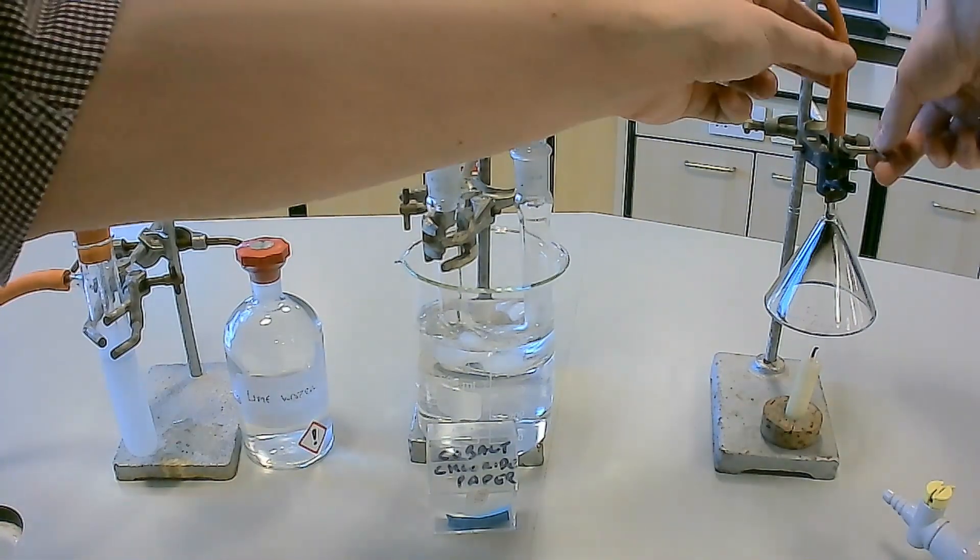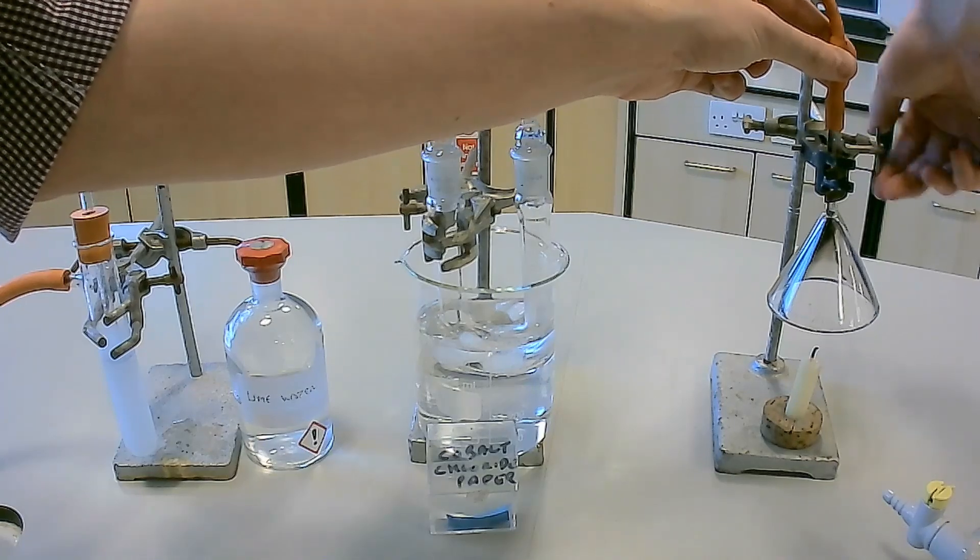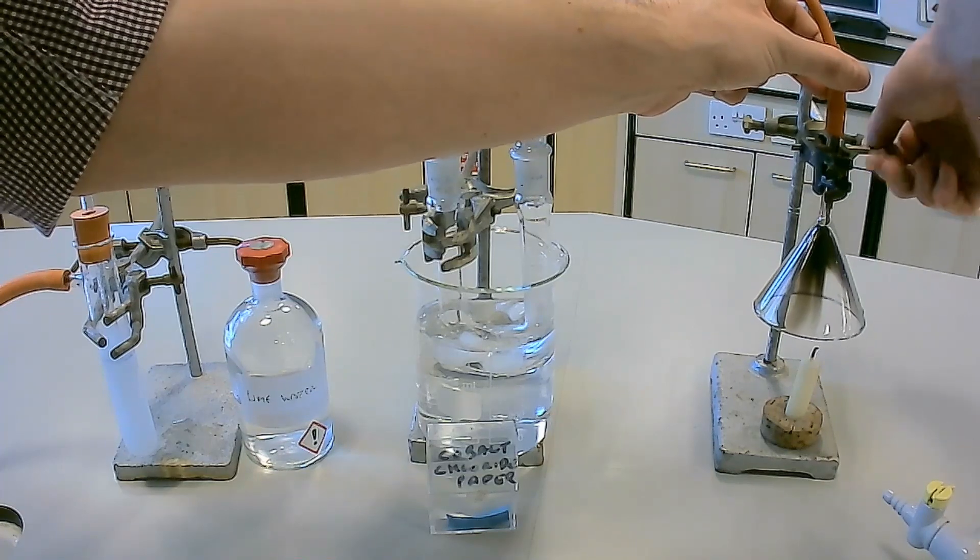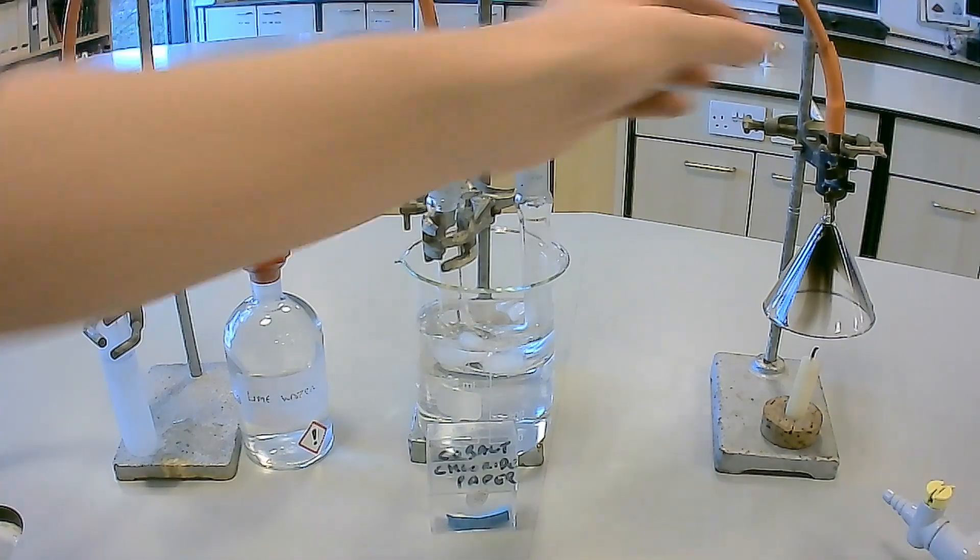At the end of the experiment, notice the build-up of black soot, which is carbon, on the glass funnel above the candle. This is due to incomplete combustion caused by insufficient oxygen as the candle was burning.